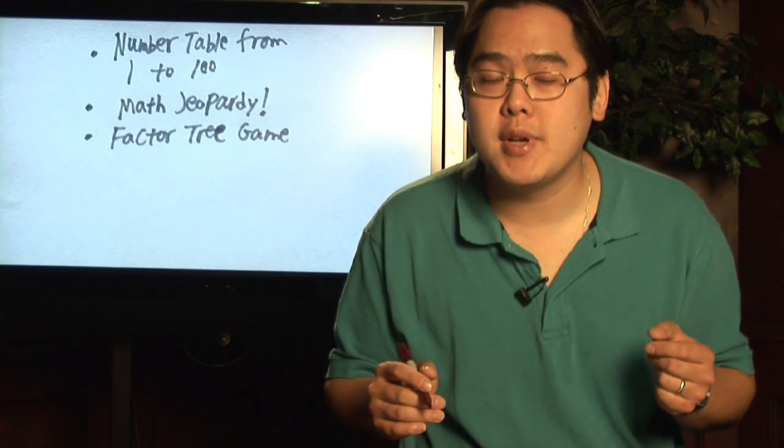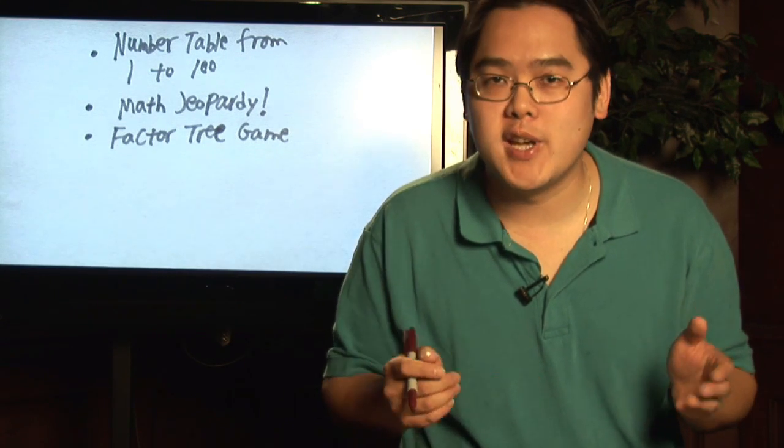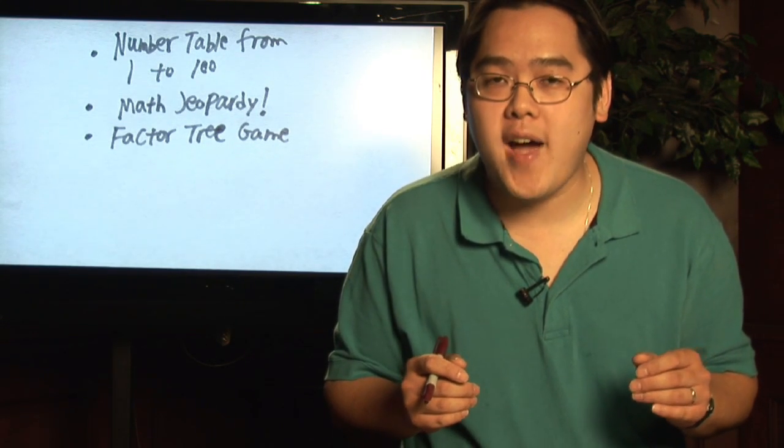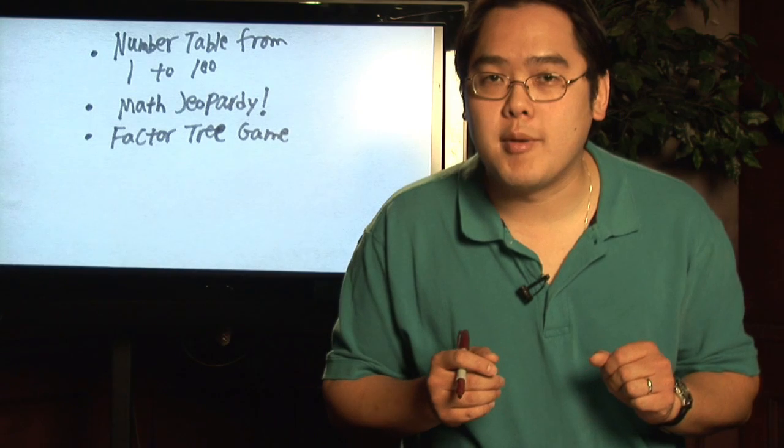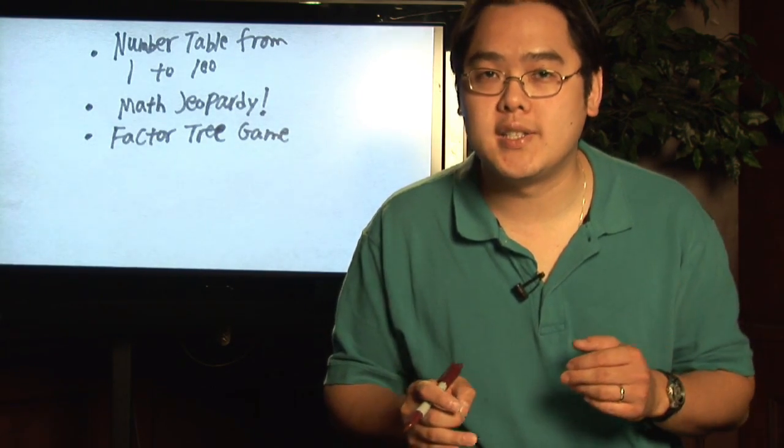Now remember, just as a quick recap: prime numbers are positive whole numbers, or integers as we call them, whose only factors are one and itself. Composite numbers are those numbers that have more factors than one and itself.